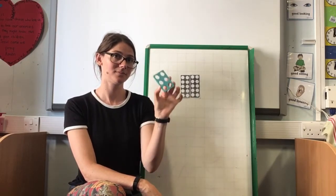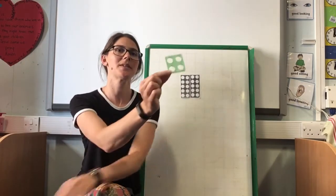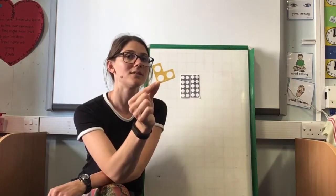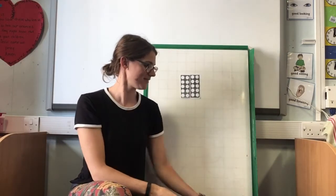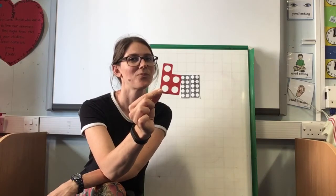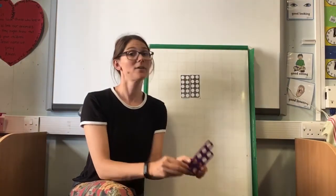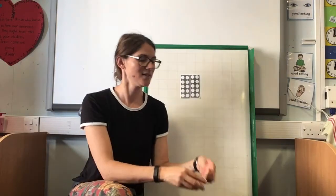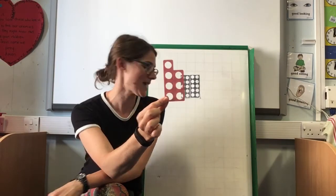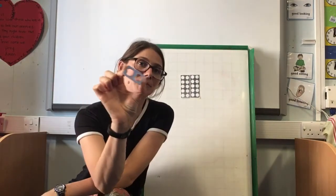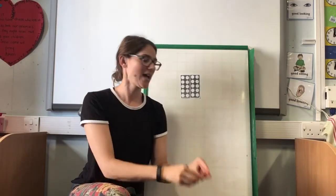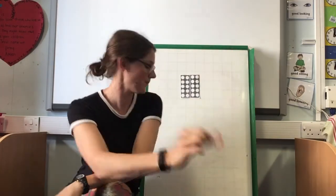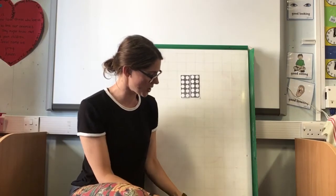Eight. Well done. Six. Good. How about this one? Four. Three. How about the red one? Five. Well done. The big purple one? Nine. Good. The pink one? Seven. Light blue? Two. And one. Okay, so we've got all of our Numicon shapes that we're going to need.